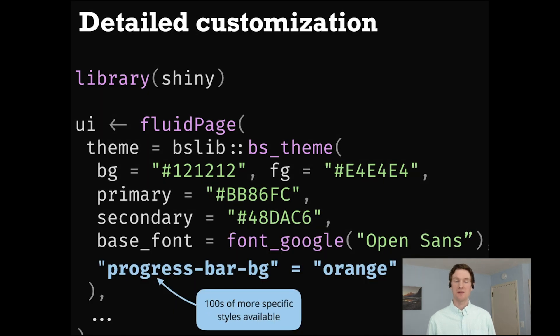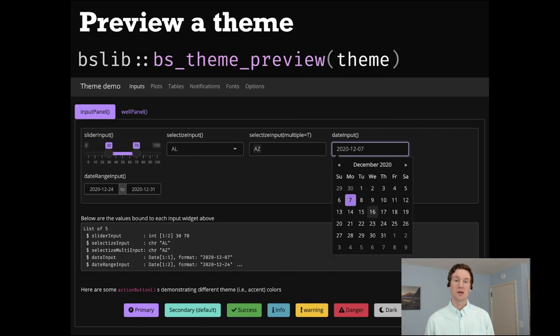And also keep in mind with this bs_theme function, you have access to hundreds of different more specific styling settings if you want to get more targeted with your styles. And to quickly preview a given theme object, try out this bs_theme_preview function, which essentially runs a demo app where you can see all the various components that your theme might impact.